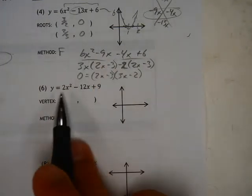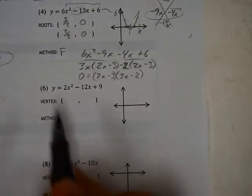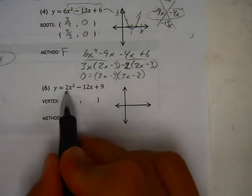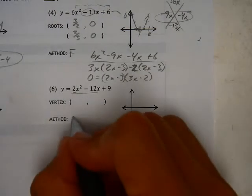This again is set up sort of the same way. I could find roots, but it tells me to find the vertex. So again, if we have a coefficient in front of x squared, there's a different way we've got to do things. So this is complete the square.